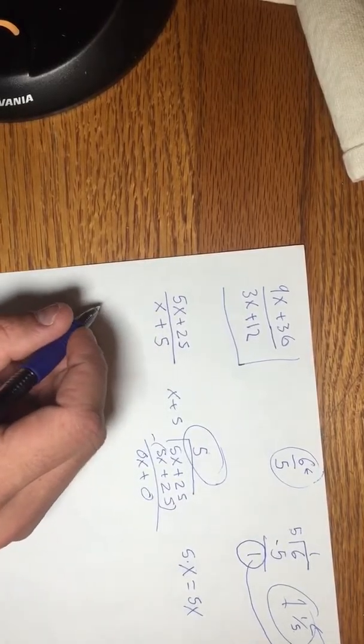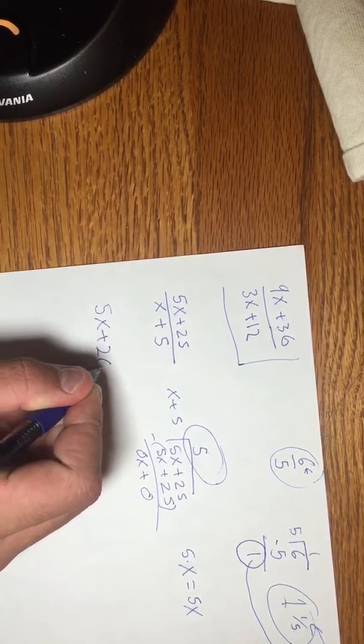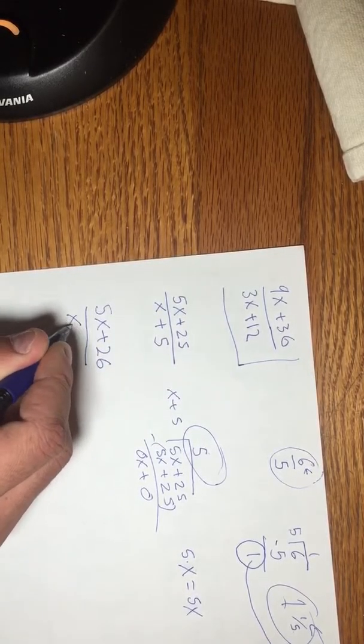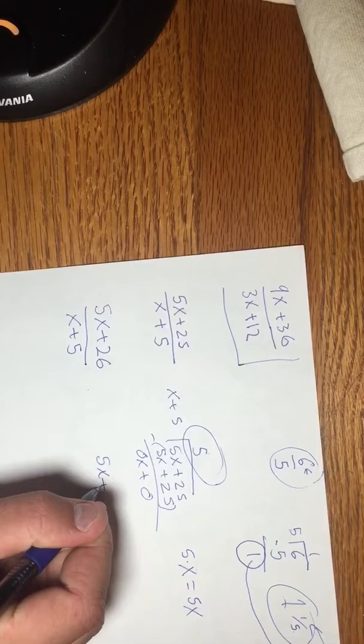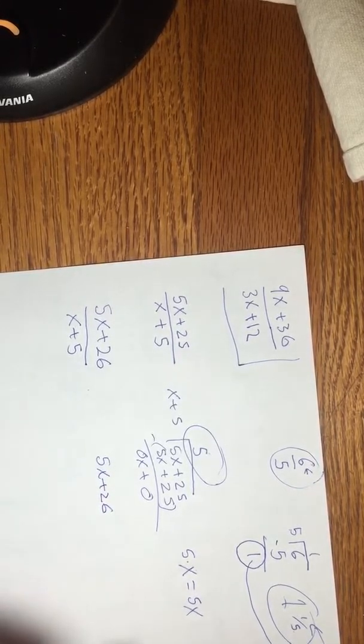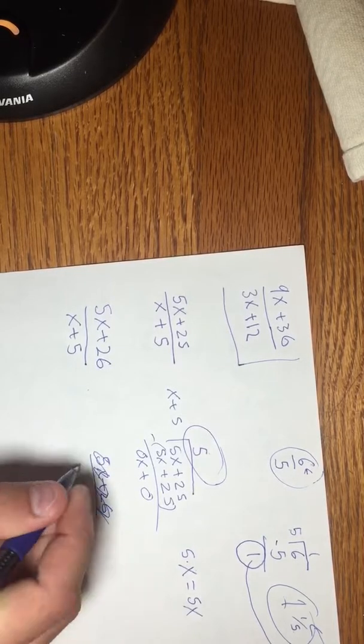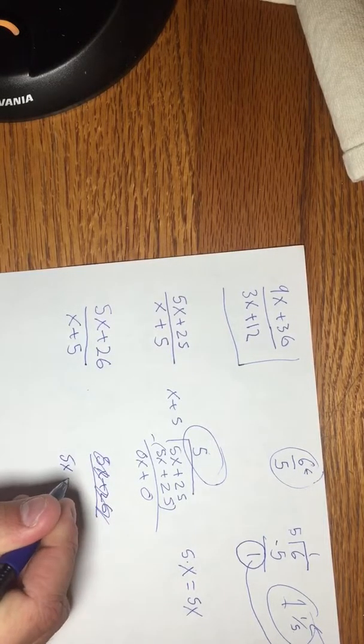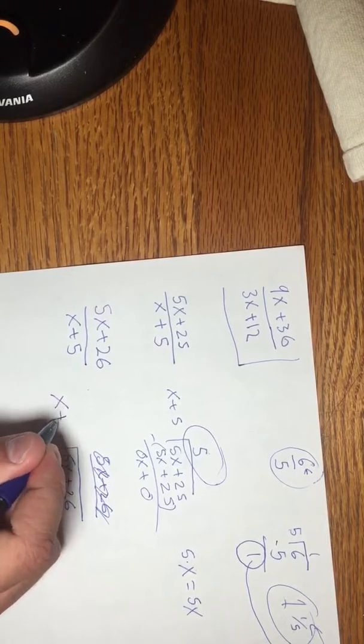Alright, now let's try one more, but let's change up the numbers just a little. Let's do 5x plus 26 over x plus 5. Okay, so same thing. 5x plus 26. You can pause this at any time, by the way.